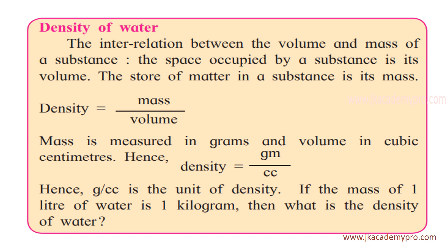Let us learn how to calculate the density of water. Density is the interrelationship between the volume and mass of a substance. Volume is the space occupied by a substance. Mass is the amount of matter present in a substance. Therefore, density equals mass divided by volume. Mass is measured in grams and volume in cubic centimetres, so density is expressed in grams per cubic centimetre.